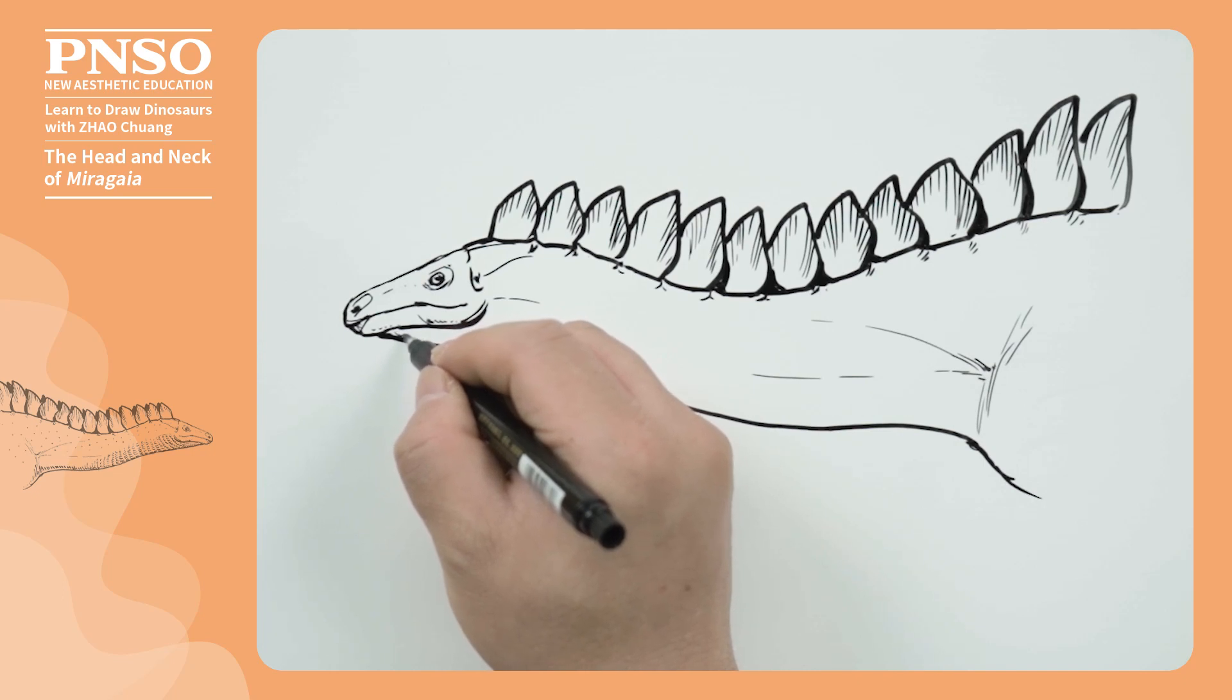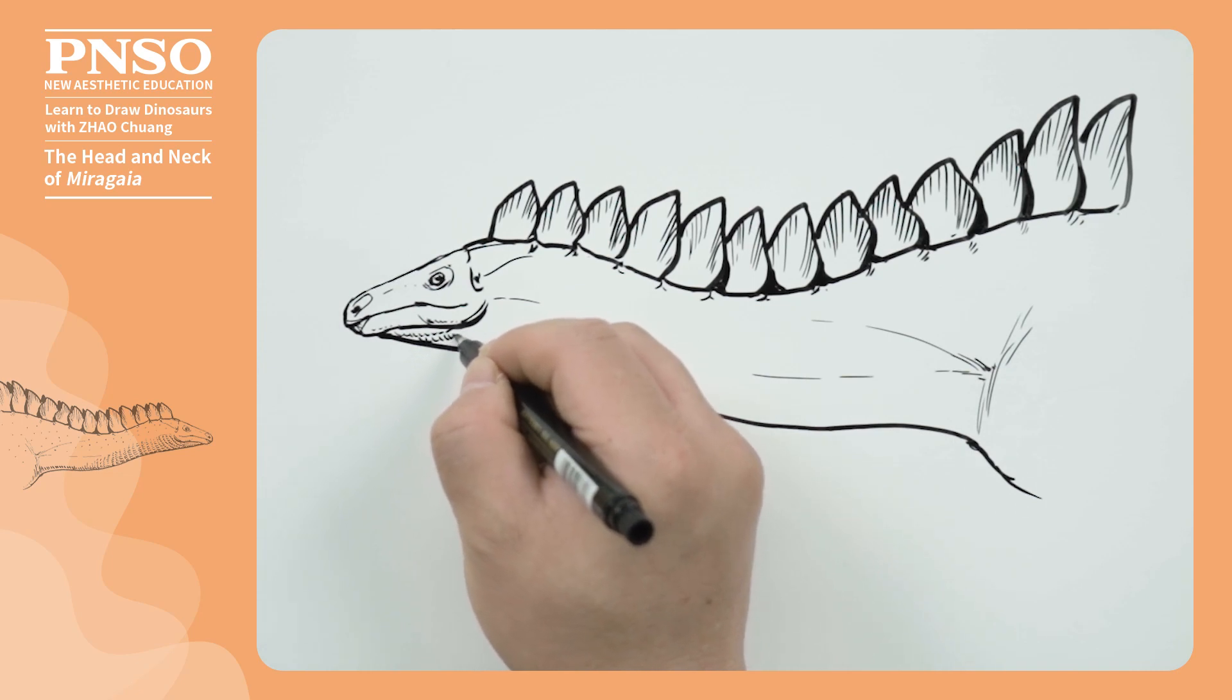Now, let's move to the gular armor on the lower jaw. This structure seems difficult to draw. In fact, there are specific rules. We can use an L shape to draw rows of lines.